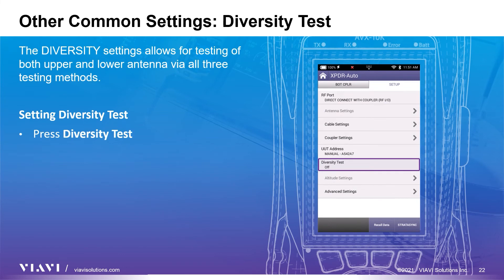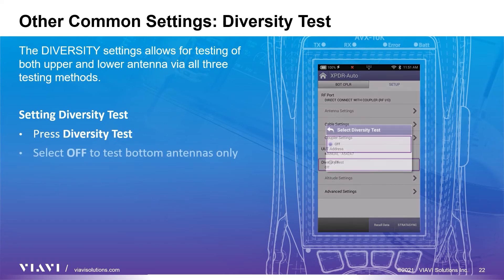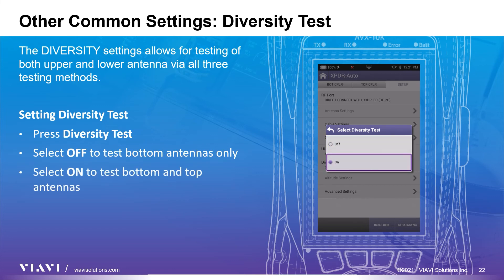You have heard us talking about how the diversity setting allows for testing of both upper and lower antennas via all three test methods. The default of diversity test is off, for testing a single channel transponder. When performing diversity testing, it is recommended to cover the antenna not under test with a coupler. Diversity off is used when testing a single channel transponder antenna usually installed on the bottom of an aircraft. Diversity on is used when testing a dual channel transponder with antennas installed on the top and bottom of the aircraft. To set the diversity test setting, press diversity test and select off for single channel or on for dual channel transponders.